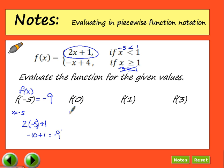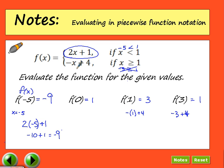Now try plugging in 0, then 1 — be careful — then 3. Evaluate using whichever function gives you a true domain statement. Hit pause and check your answers. F of 0 is 1 using the first function. F of 1 is 3 — use the second function because at X equals 1 it satisfies greater than or equal to 1. F of 3: since 3 is greater than 1, plug into the second function.